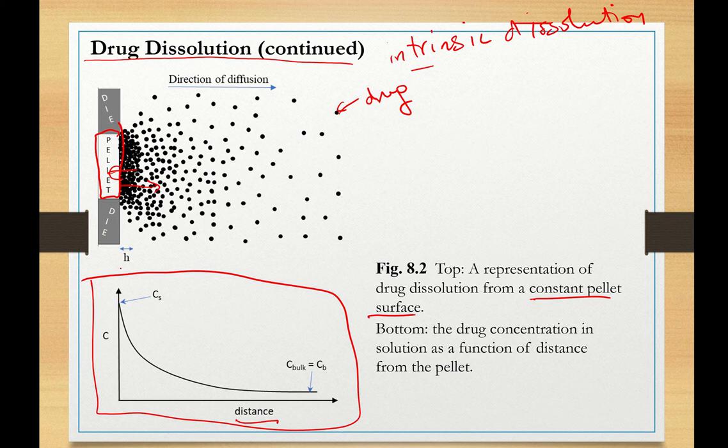At distances from pellet equal to h, this h is called stagnant layer or hydration layer, the drug concentration is highest. We call it supersaturated concentration, Cs. As the drug diffuses into the bulk solvent, its concentration reaches a constant value, which is called equilibrium concentration or C-bulk.